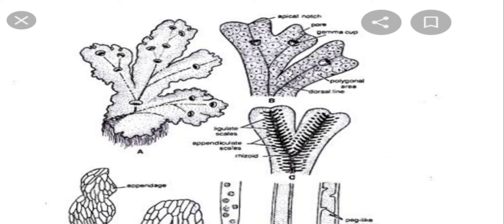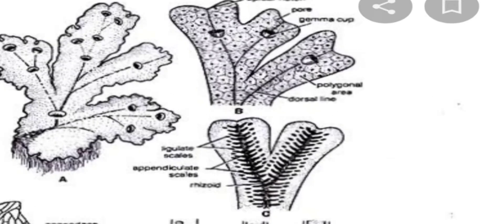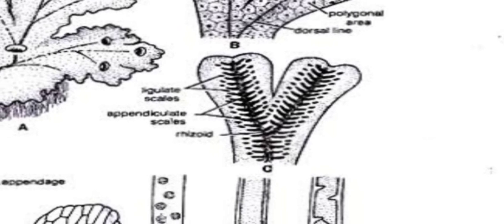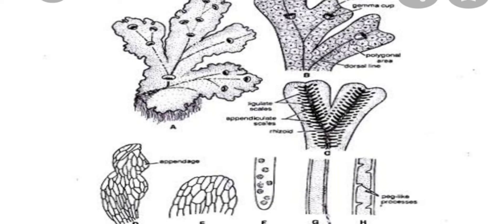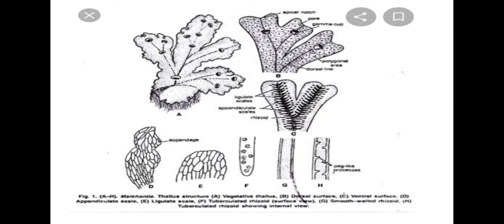The scales are further of two types: appendiculate and ligulate. So this is the external as well as internal structure in Marchantia. You can see there is a prominent midrib, an apical notch or growing point, polygonal areas, air pores, and at the lateral surface you will find scales as well as rhizoids. Scales are of two types — ligulate and appendiculate — while rhizoids are further tuberculate as well as smooth walled. That's all about the external structure of Marchantia.